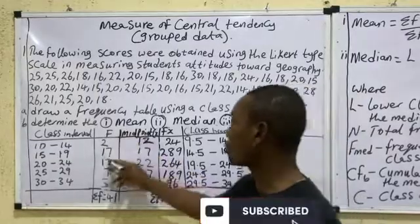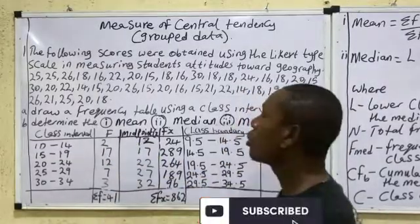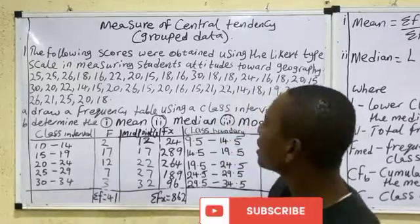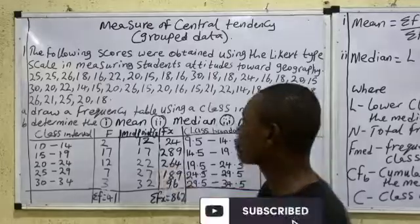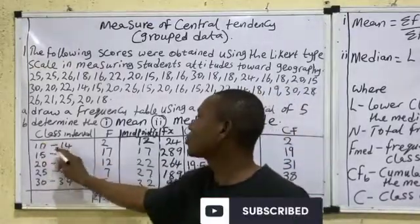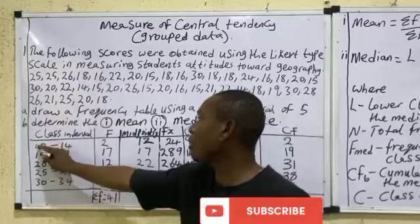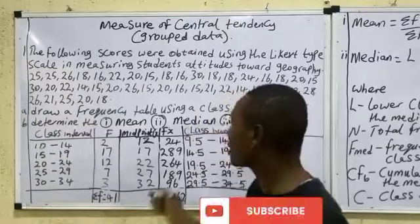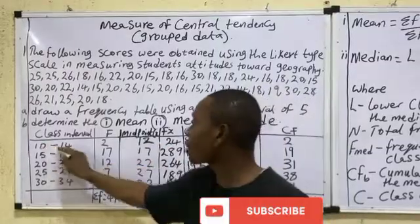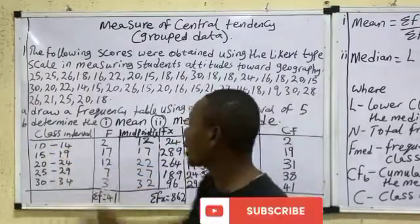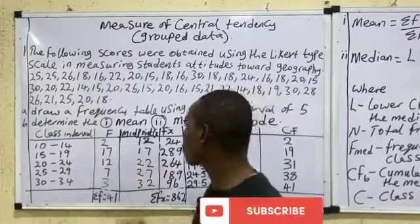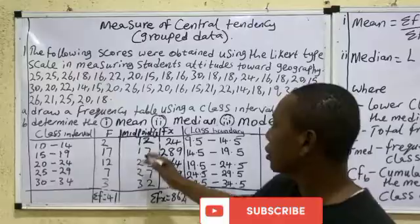Sum the frequencies: 2+17+12+7+3 = 41. Next, find the midpoint x for each class by adding the upper and lower class limits and dividing by 2. For 10–14: (10+14)/2 = 12. For 15–19: (15+19)/2 = 17. Repeat for all other classes.